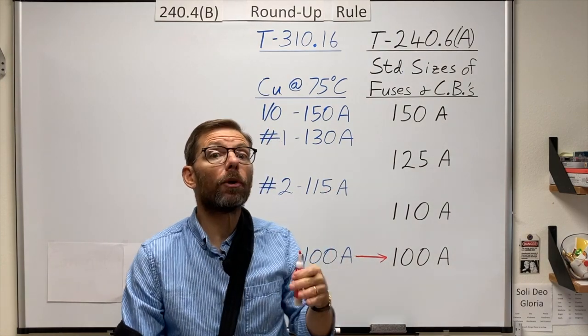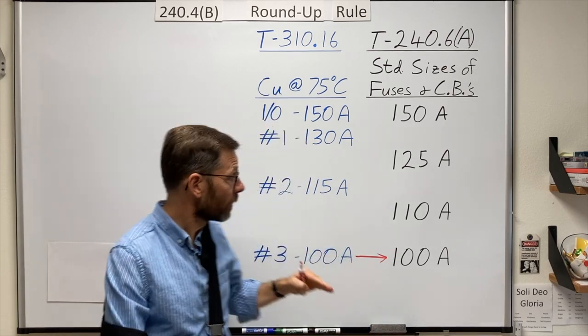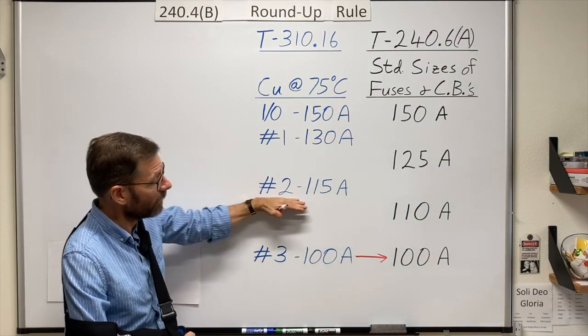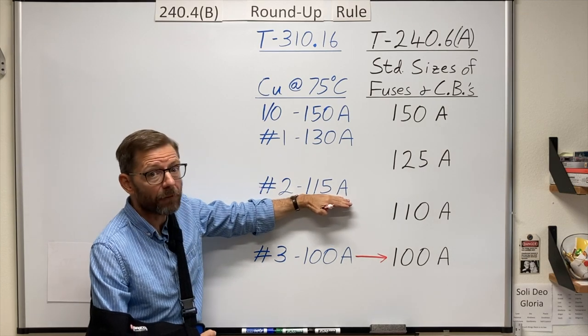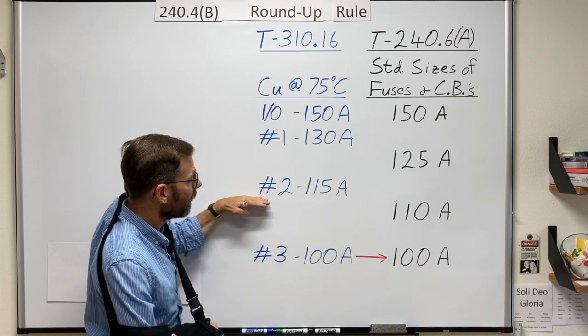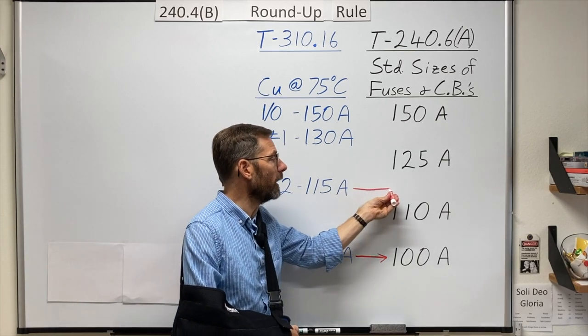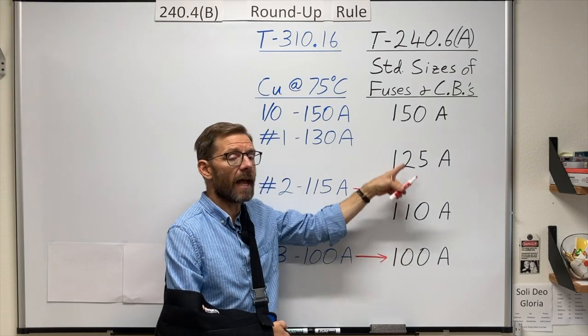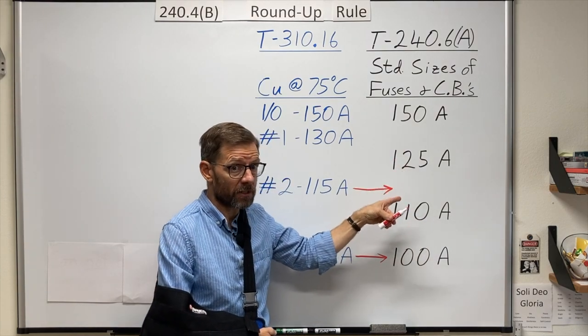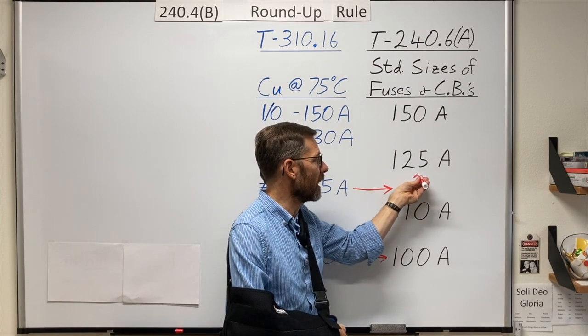However, this is a permissive rule, and it allows us, at times, to protect a conductor whose ampacity, after any derating, any adjustments or corrections, if the conductor's ampacity comes in between two standard sizes overcurrent devices, I can protect this conductor with the next bigger size.